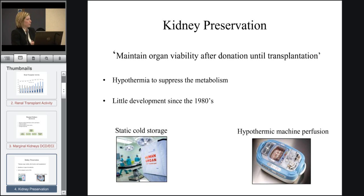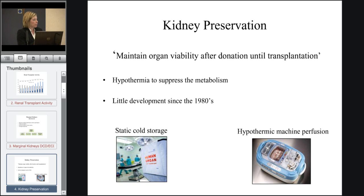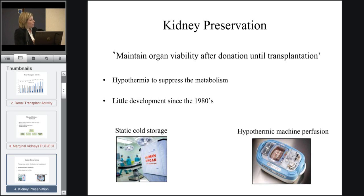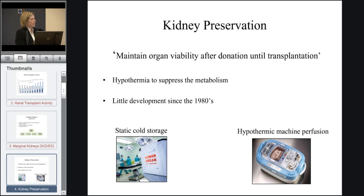Static cold storage is what we mostly use in the UK. It's a very simple technique in that the kidney is flushed with cold preservation solution and then stored on ice until it's transplanted. Hypothermic machine perfusion is slightly more complex, and involves placing the kidney on a machine and circulating cold preservation solution through the kidney at a low pressure. There's really been little development of hypothermic preservation techniques since the 1980s, although we have seen some development in the technology.